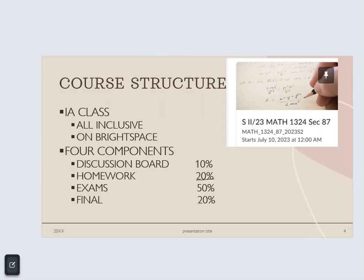So we're going to talk first about the structure. In this center part of our video it says Summer 2023 Math 1324 Section 87. This is what you'll click on to get to my program on Brightspace, and hopefully you know how to do that. This is an IA class, all-inclusive. It's on Brightspace completely. All you have to do is click on it and accept, and you're ready to roll.